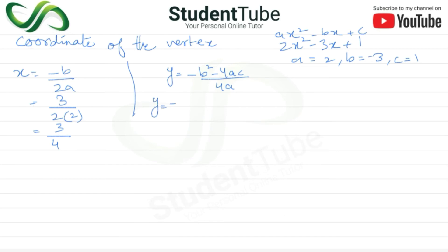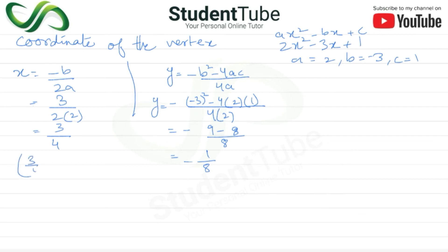The y-coordinate of the vertex is y = -(b² - 4ac) / 4a. So b² = (-3)² = 9, 4ac = 4 × 2 × 1 = 8, upon 4 × 2 = 8. So y = -(9 - 8) / 8 = -1/8. So the coordinate of the vertex is (3/4, -1/8).